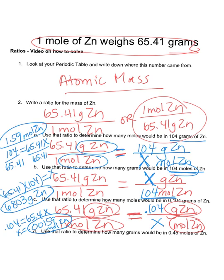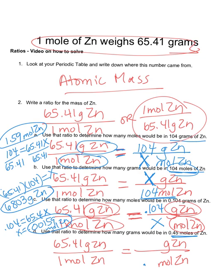Lastly, for D, I'm going to go back and copy the exact same thing. 65.41 grams of Zn, 1 mole of Zn equals grams of Zn, moles of Zn. Now I look at the information in the problem. The information in the problem is 0.45 moles of Zn. I plug that in there, solving for grams.